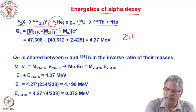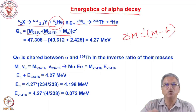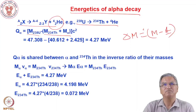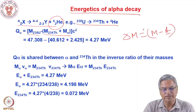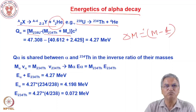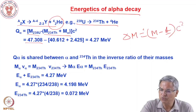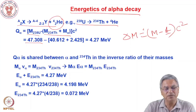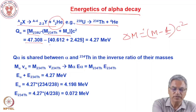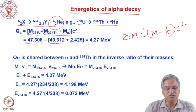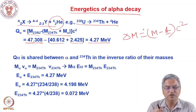The mass defect is defined as delta M = M minus A, where M is the actual mass in atomic mass units and A is the mass number. This times c-squared becomes the mass defect, and mass tables give masses in terms of mass defect. So 47.308 is the mass defect, meaning (M minus A) times c-squared. When you have the alpha decay, since the mass number is conserved, it gives the difference in the masses of the parent and daughter. The difference comes out to 4.27 MeV, which is the Q value of this alpha decay — the energy liberated in the process. It is a positive Q value, shared between the alpha particle and daughter product thorium-234.